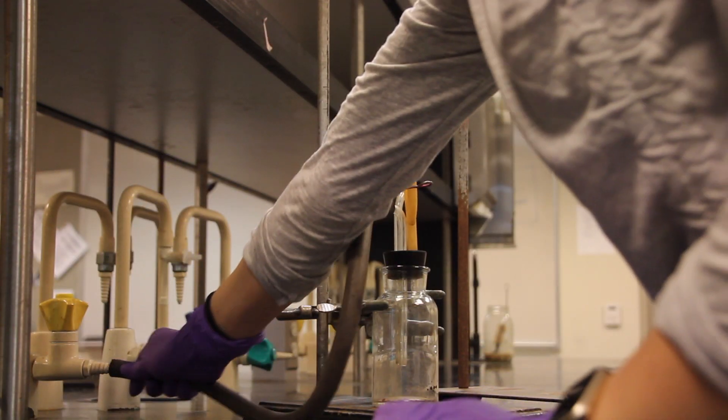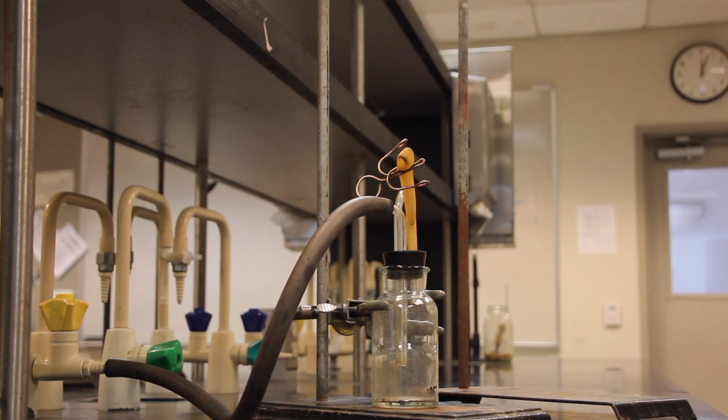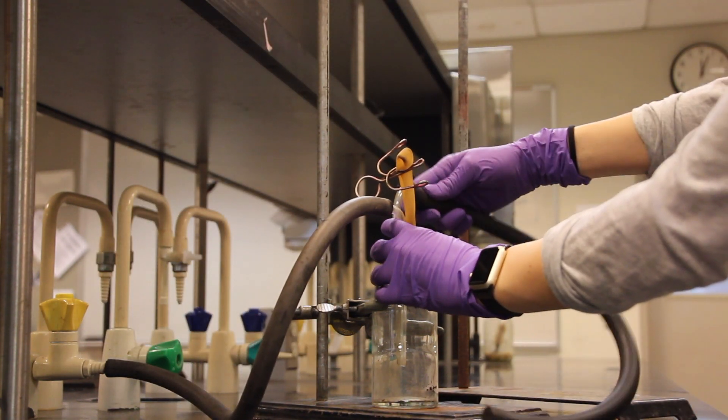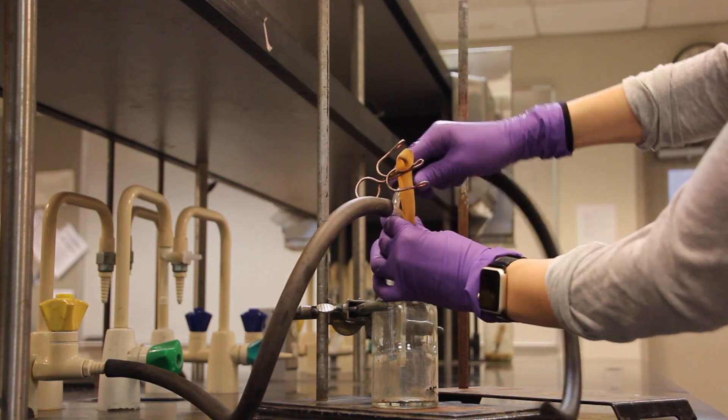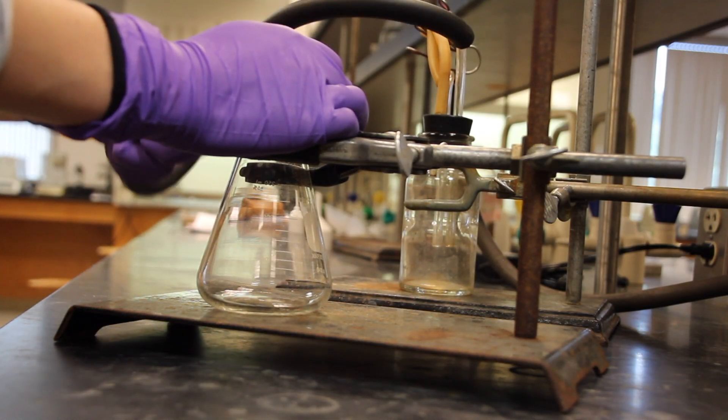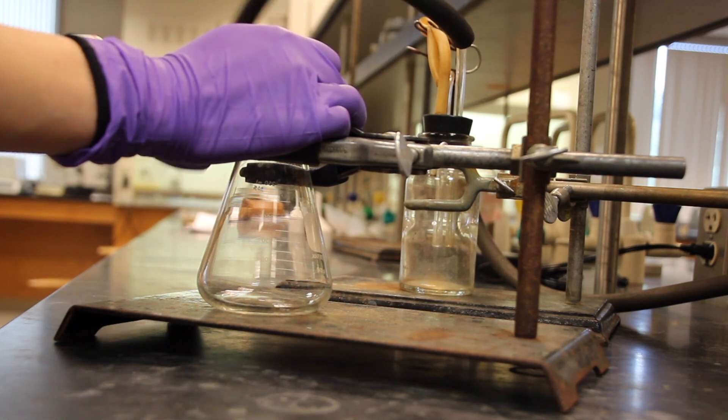One side of this vacuum tubing will be connected to the lab's vacuum system. The other side of the vacuum tubing will be connected to the clamped vacuum filter flask.